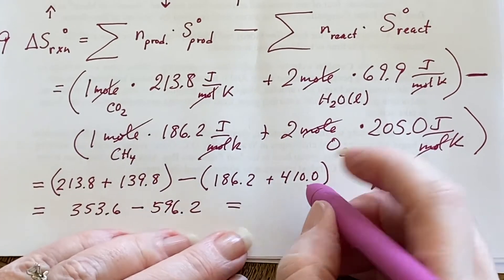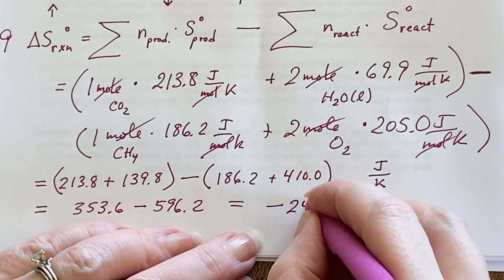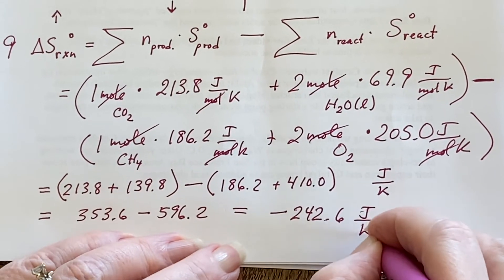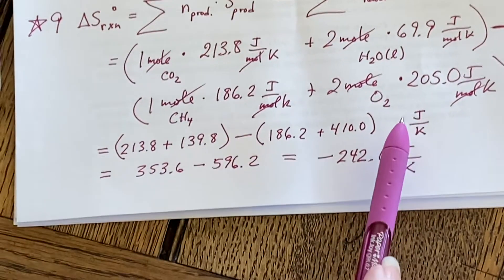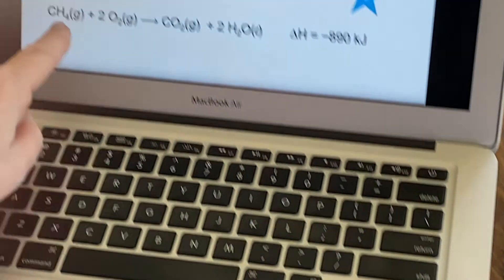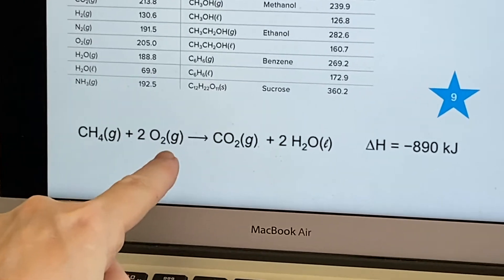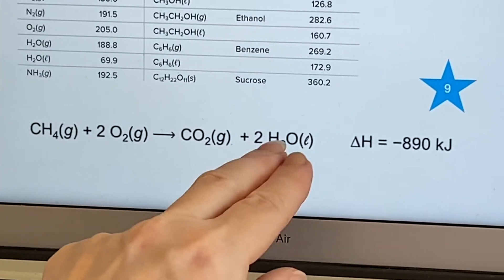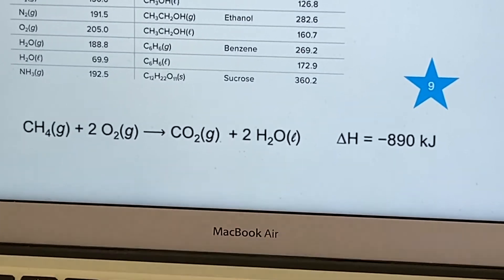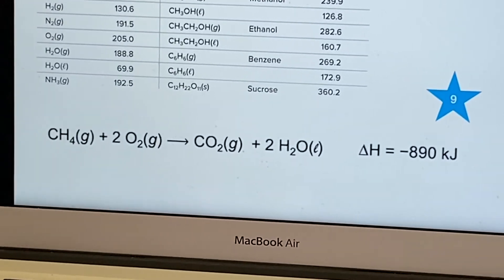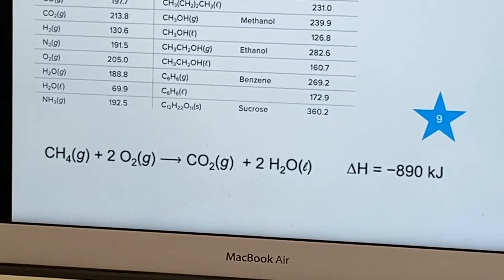Which is going to be a negative 242.6 joules per Kelvin. The entropy has decreased. Well, that's what we expected. We had gas and two more gases, three gases going to one gas and two liquids. So we would expect the entropy to go down, so I'm happy to see this negative sign. It confirms what I thought I would see.